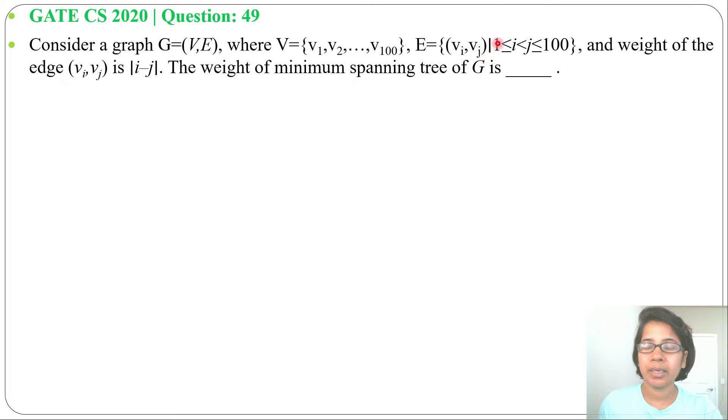E equals {(vi, vj) | 1 ≤ i < j ≤ 100}, so i value should be less than j. The weight of the edge (vi, vj) is |i - j|. The weight of minimum spanning tree of G is what? In this question there are 100 vertices.